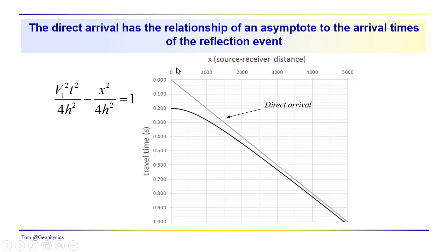The direct arrival stripped out to what you would see on a shot record. This arrangement is referred to as an off-end source-receiver arrangement, so we are only seeing one half of the hyperbola. If we had a split spread with geophones going out in both directions, we would see both halves. For now, we are looking at the off-end geometry with the source at x0 = 0.